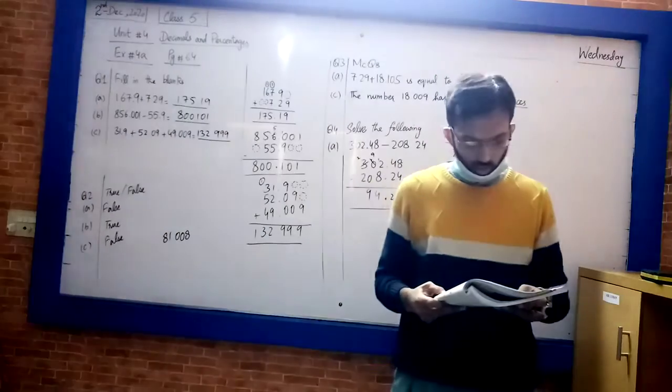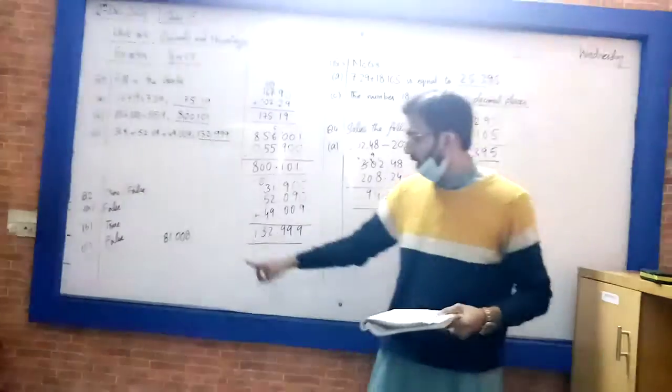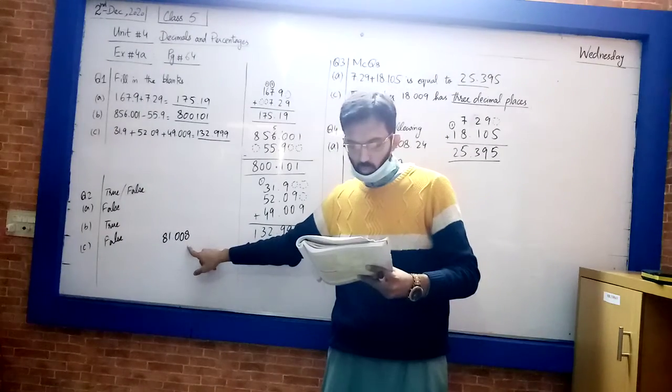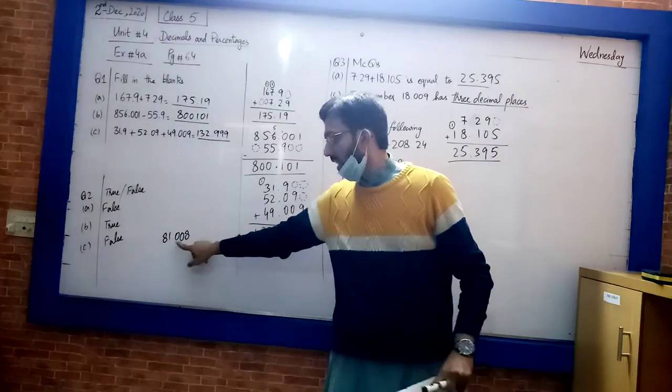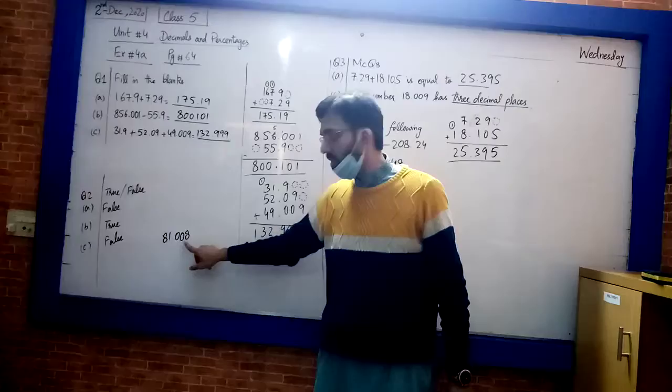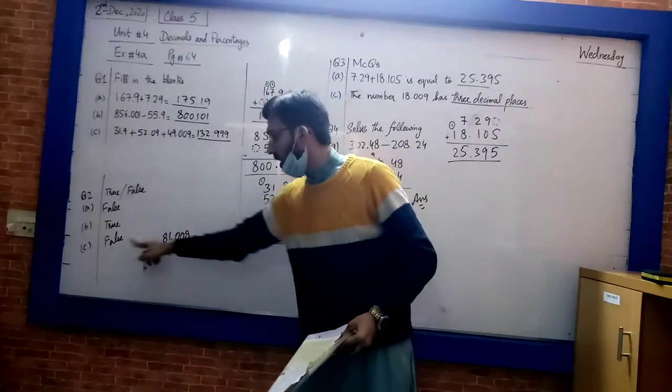The number is this one. It has one decimal place, so this is one decimal place. You have three decimal places. It means the statement is false.